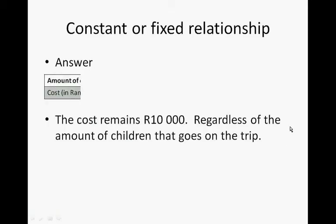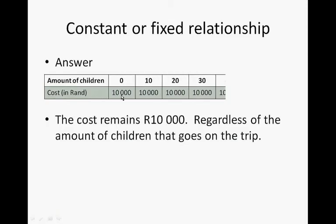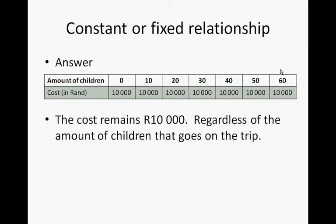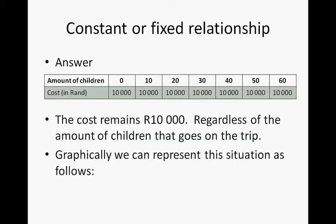Let's quickly fill a table. If no children go on the trip, we will have to pay R10,000. But if 60 children go on the trip, we still have to pay R10,000. Remember, a bus that you rent or a big bus is only allowed to take 60 passengers, so we're not going to see what happens if we take 100 children. Let's represent this situation graphically.